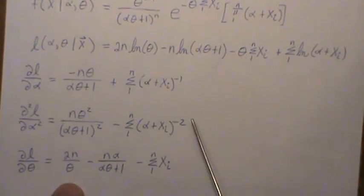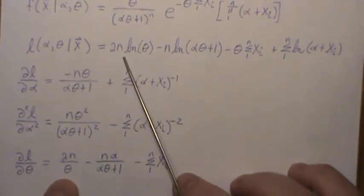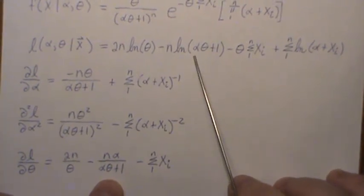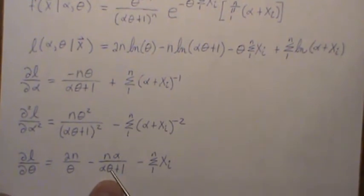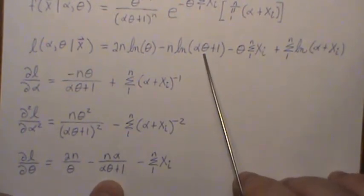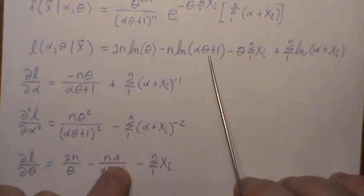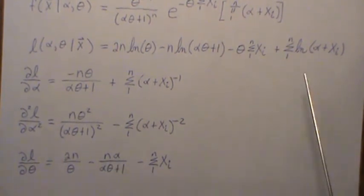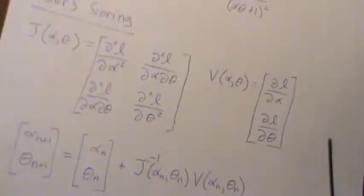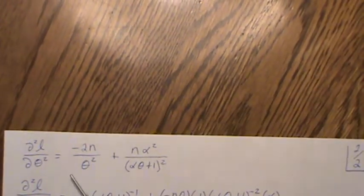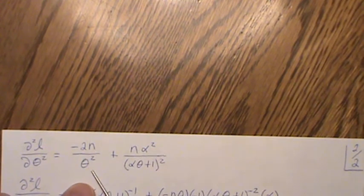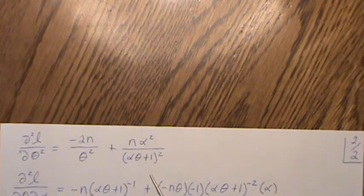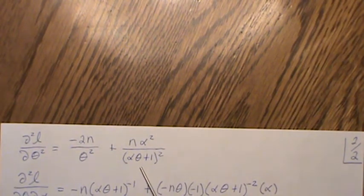When we take them with regard to theta, here we get the two n, one over theta. Here, we get minus n, one over that, and then times the derivative with respect to theta, which is alpha. Here, we just get the sum of the xi. This is constant, goes away. The second derivative with respect to this is minus two n over theta plus n alpha squared over alpha theta plus one squared.